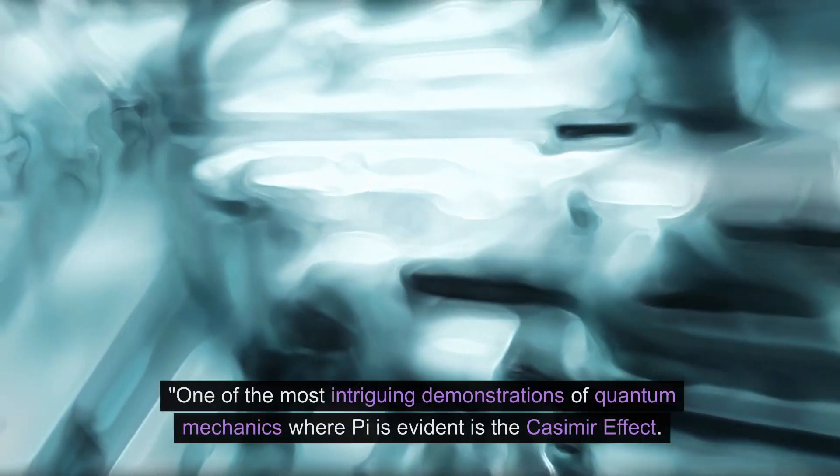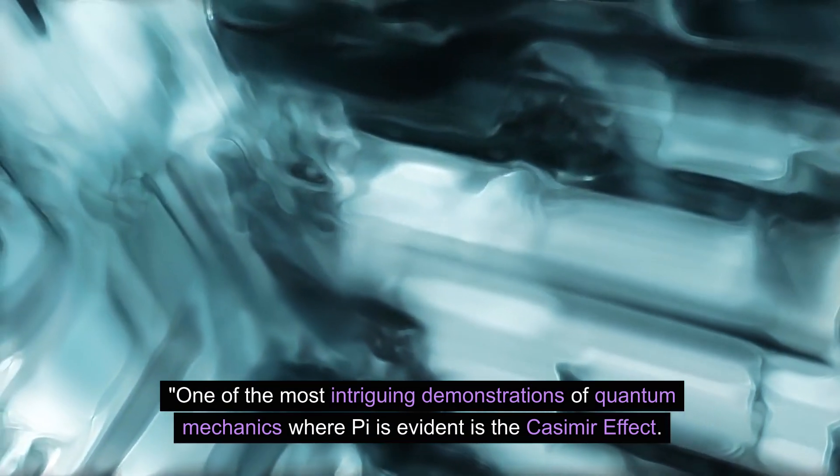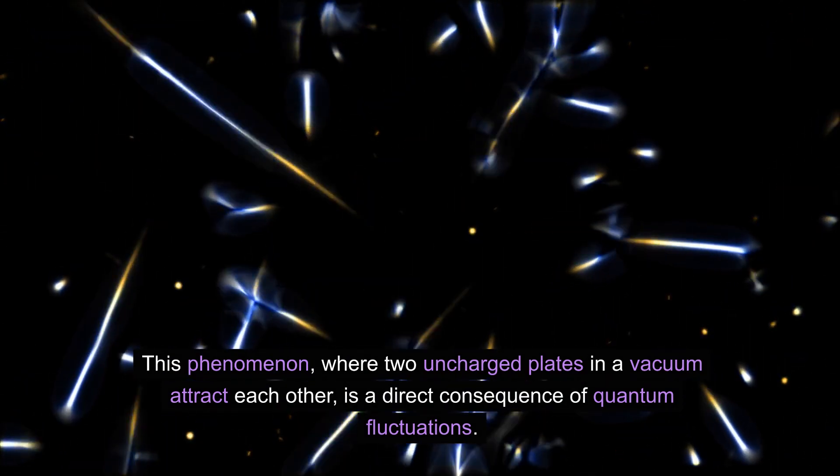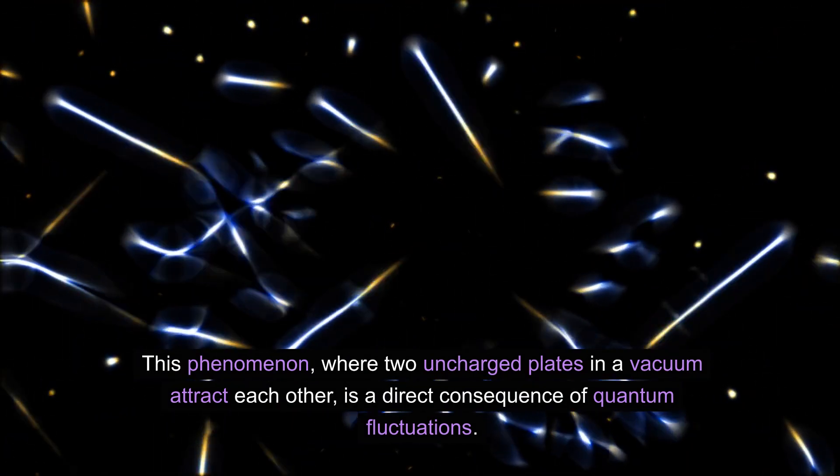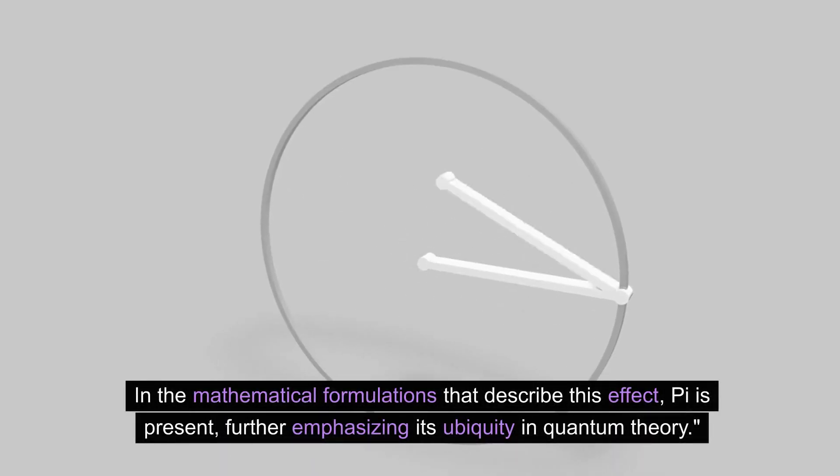One of the most intriguing demonstrations of quantum mechanics where pi is evident is the Casimir effect. This phenomenon, where two uncharged plates in a vacuum attract each other, is a direct consequence of quantum fluctuations. In the mathematical formulations that describe this effect, pi is present, further emphasizing its ubiquity in quantum theory.